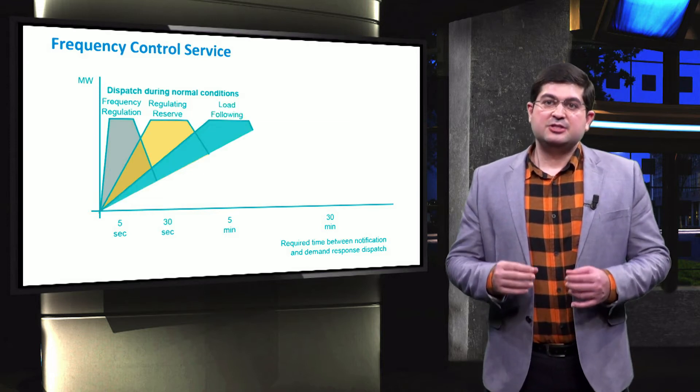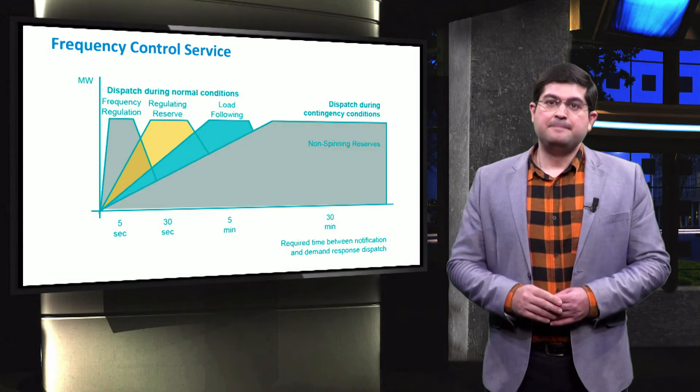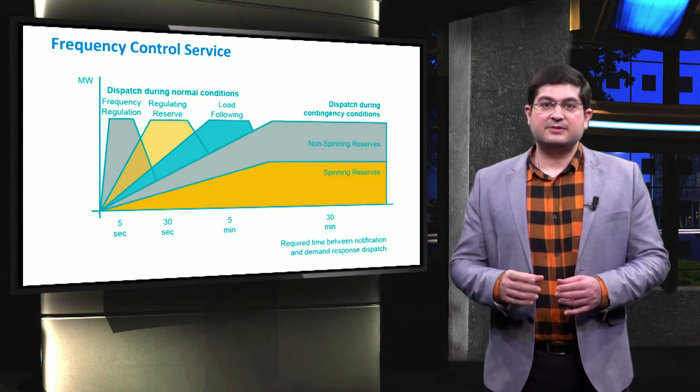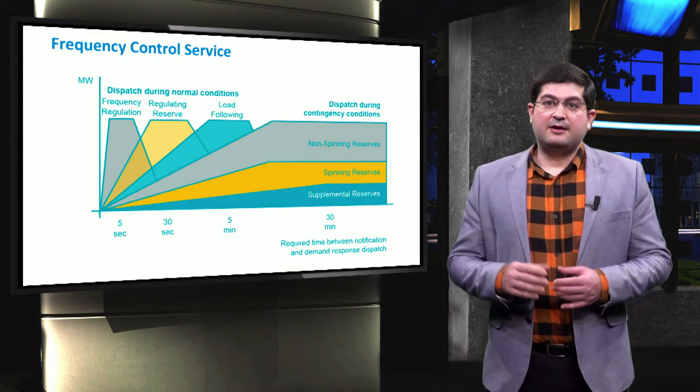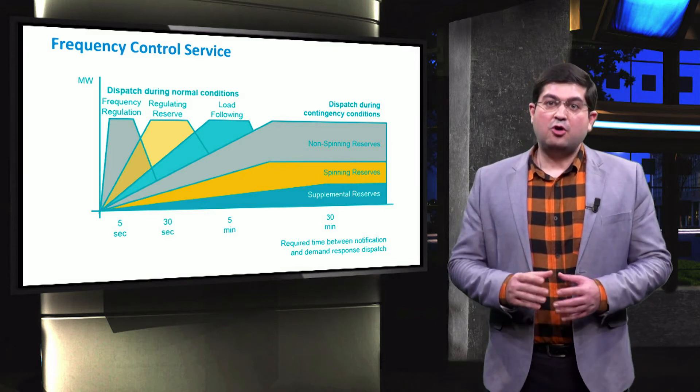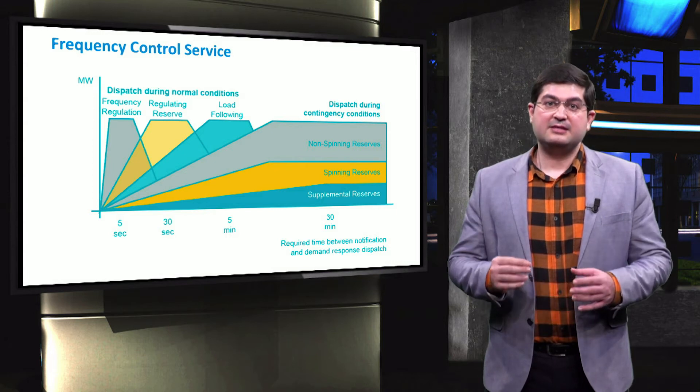In dispatch during contingency events, non-spinning reserves, spinning reserves, and supplemental reserves are used on a much longer time frame to cope with frequency control at different power levels.